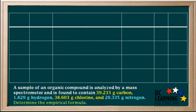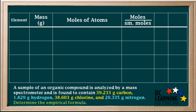We can organize our calculations in a handy table with six columns. Since we have four elements, we'll make five rows. In the first column, we write the symbol for each element. In the second column, we note the mass of each element. In the third column, we convert mass in grams to moles of atoms. In the fourth column, we divide the moles of atoms of each element by the smallest number of moles to find the simplest ratio. We leave a blank in the fifth column and write the whole number ratio in the sixth column.